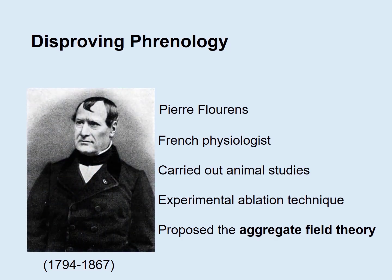How did the world rid itself of phrenology? It was due in part to the work of Pierre Flourens. He systematically ablated the brains of animals — birds usually, maybe some rabbits — and observed how they behaved after the brain parts were removed. The word ablation refers to the surgical destruction or removal of brain tissue.